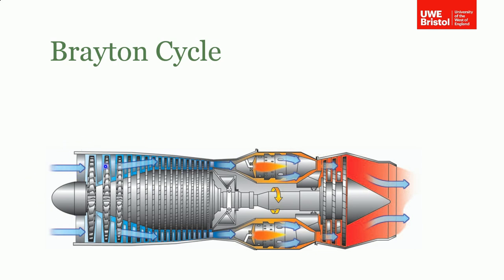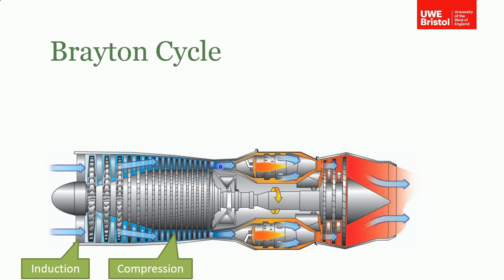To remind you of the operation: air is drawn in at the front through the compressor — this can be thought of as induction. The air comes in and as it goes through the compressor blades, it's compressed and increases in pressure. Eventually it goes into the burners where fuel is added and burned with the air in the combustion cans.